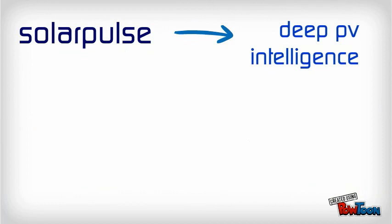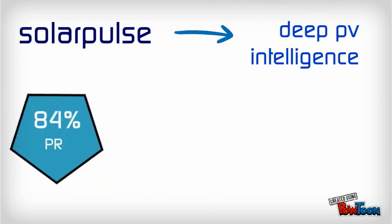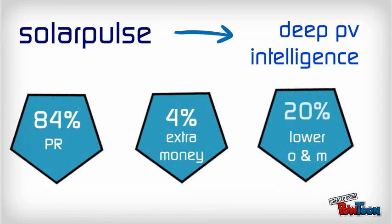Solar Pulse's deep PV intelligence enables an 84% performance ratio, saves 4% of your money, and allows for 20% less time spent on operations and maintenance.